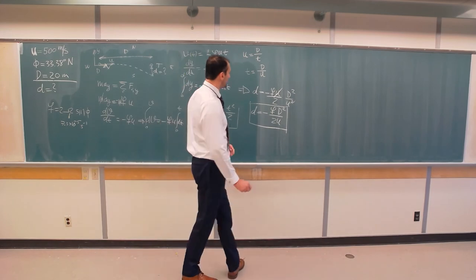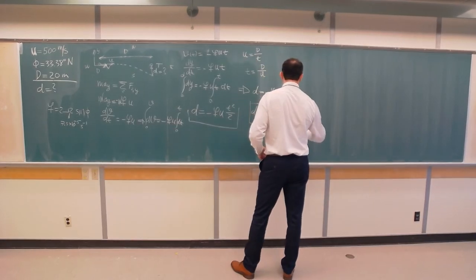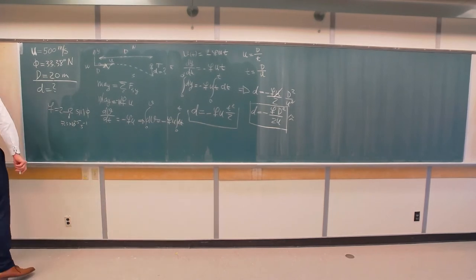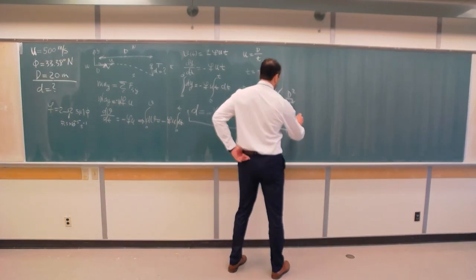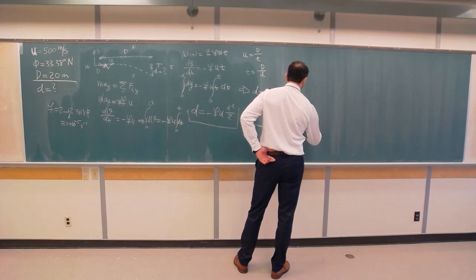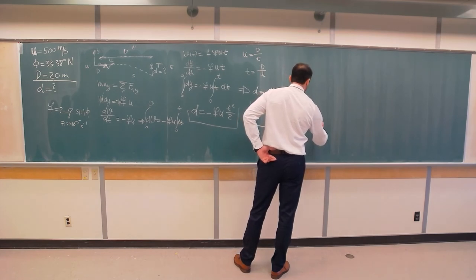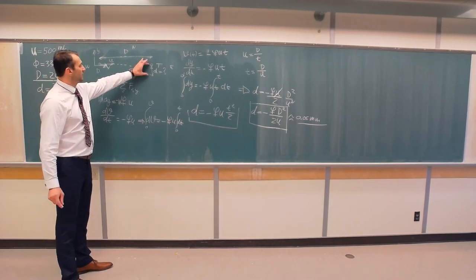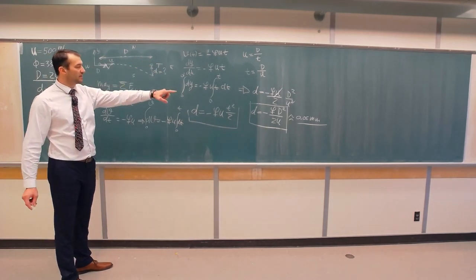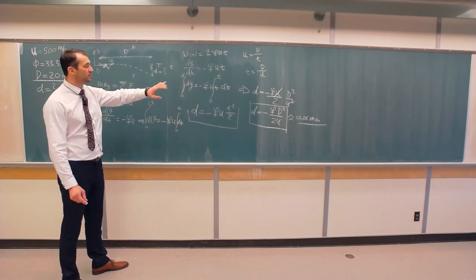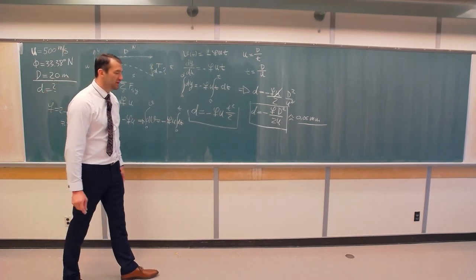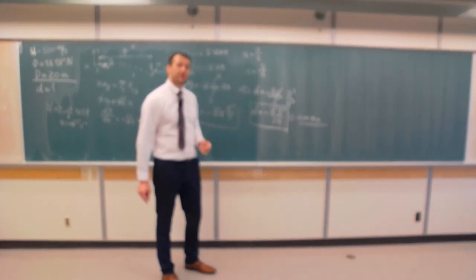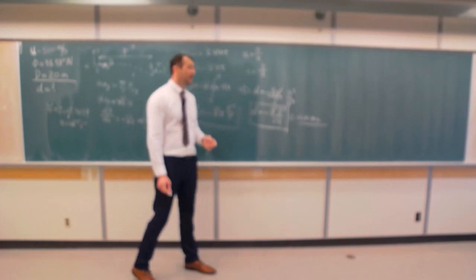So if you plug in all these numbers over here, I believe—I don't have it now on top of my head—I believe, so I see it here, that the displacement is approximately 0.06 millimeters. So the displacement of the bullet in the y direction is less than a millimeter. In fact, it is 0.06 millimeters. So there is no way that I was missing the targets because of the Coriolis effect. It was simply my lack of accuracy.